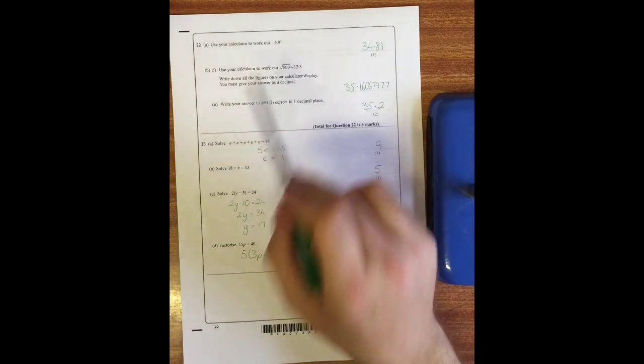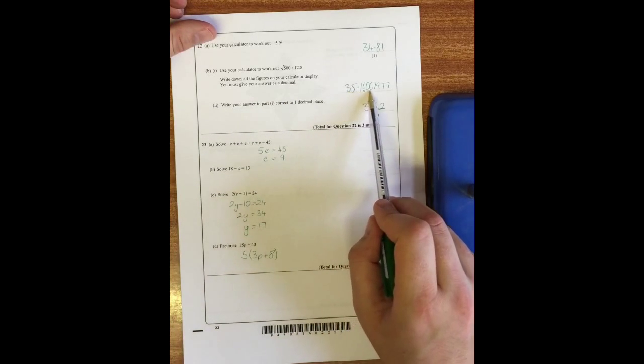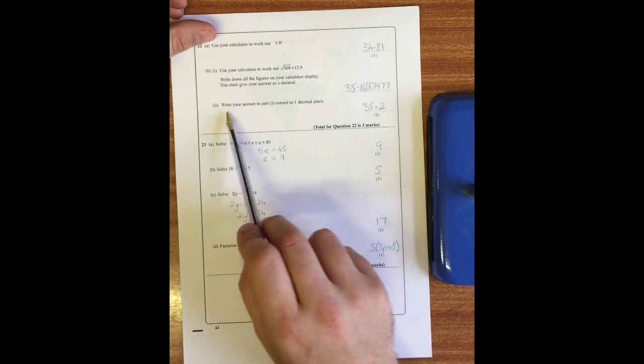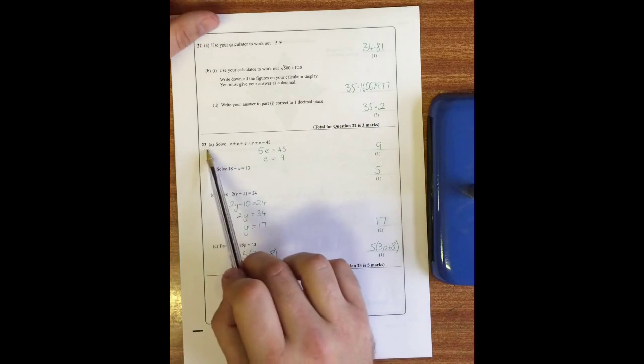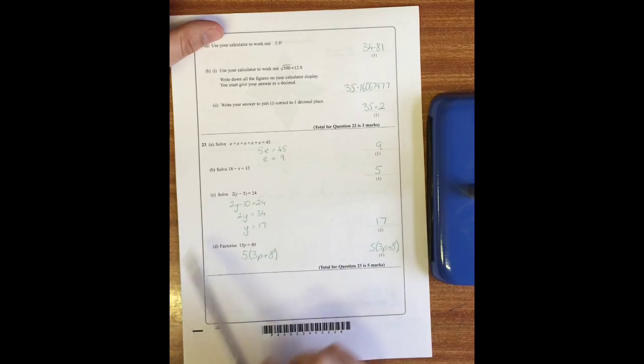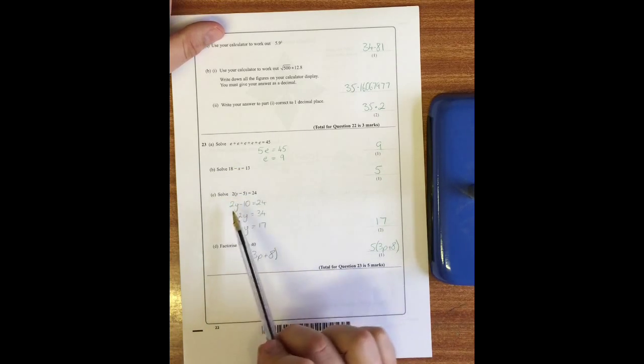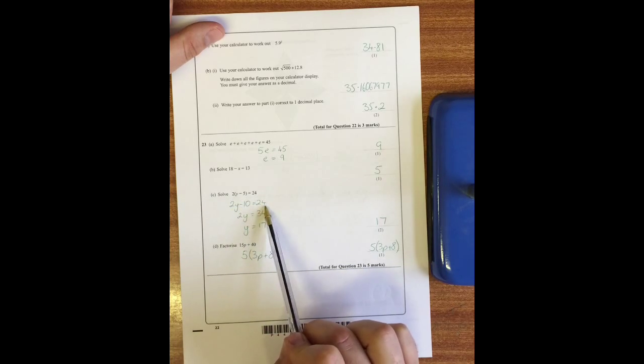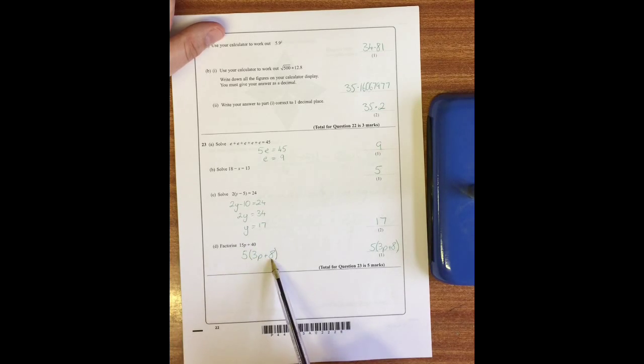Question 22: use your calculator to work out 5.9 squared - you get 34.81. Use your calculator to work out the square root of 500 plus 12.8. My entire calculator display is 35.16067977. Round your answer to part B to one decimal place: 35.2, because there's a six that rounds the one up to a two. Solve this: well there are five E's there, so five E is 45, so one E - if you divide 45 by five - you get nine. Solve 18 minus x equals 13. Well x must be 5, because 18 take away 5 is 13. Solve this: first of all I would expand the brackets to give me 2y minus 10 equals 24, then add the 10 to both sides gives me 2y equals 34. Divide by 2 I get y is 17. Factorize this: well 5 goes into both 15 and 40, so if I pull 5 outside the brackets I would then need to times that by 3p to get to 15p and by 8 to get back to 40.